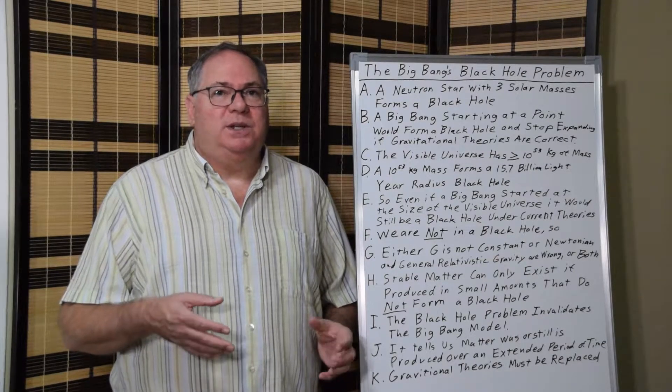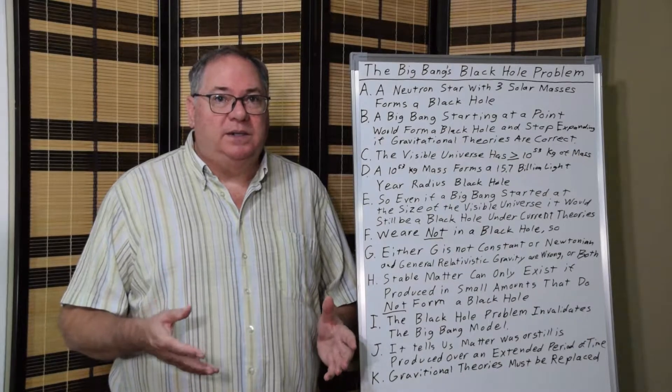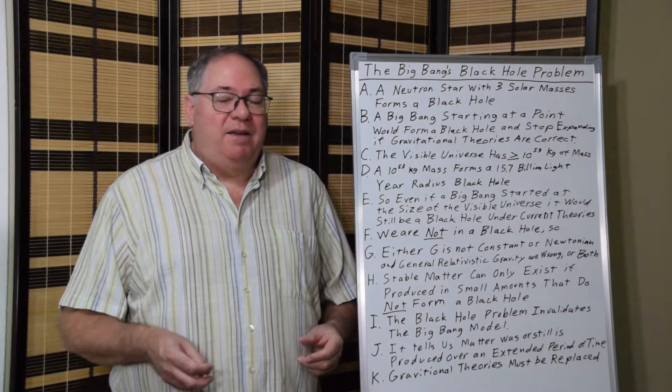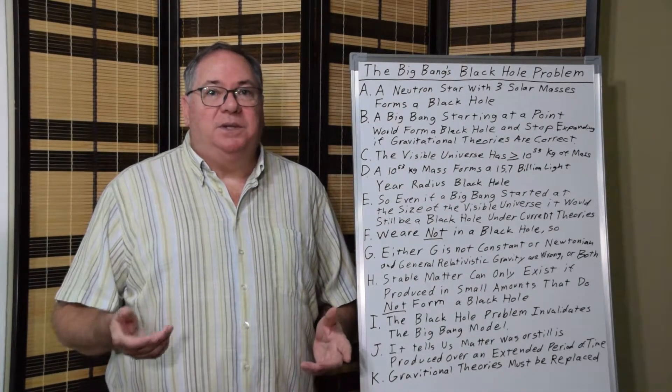And even if it wasn't a point, it was some object but smaller, say less than the size of our sun, it would still form a black hole. Even if it was the size of a galaxy, it would still form a black hole and it would stop expanding.